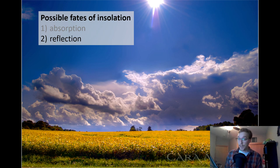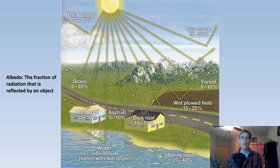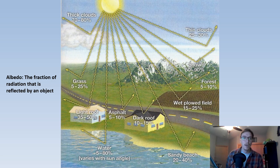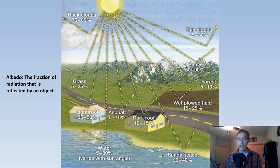Insolation can also be reflected. Albedo is the term we use for the fraction of radiation that is reflected by an object. A light roof, for example, reflects 35 to 50% of the incoming radiation. Asphalt only reflects 5 to 10% — it absorbs a lot because it's much darker in color.